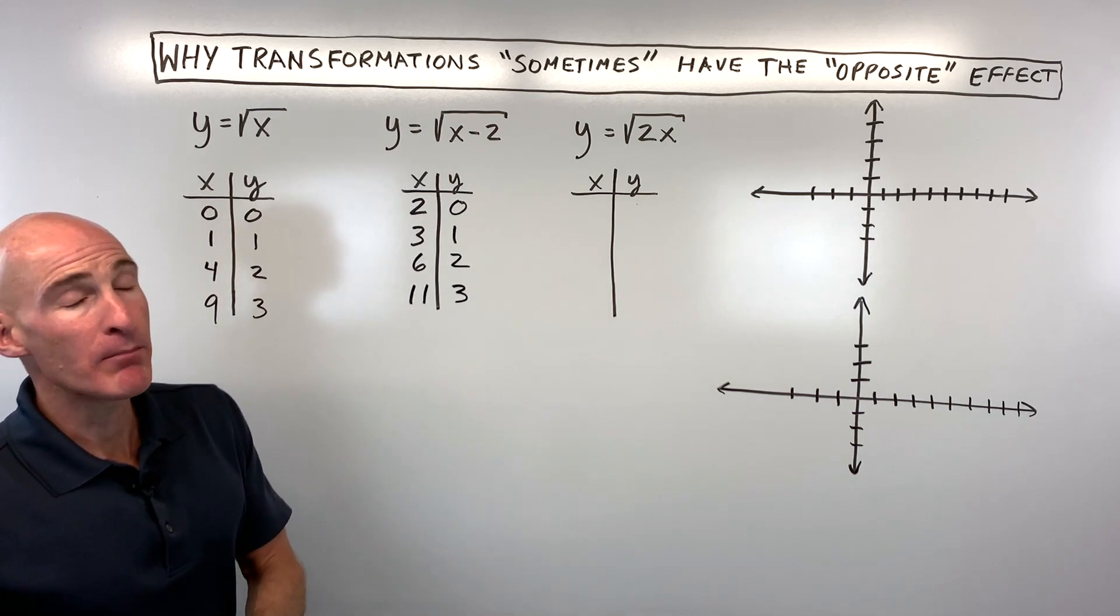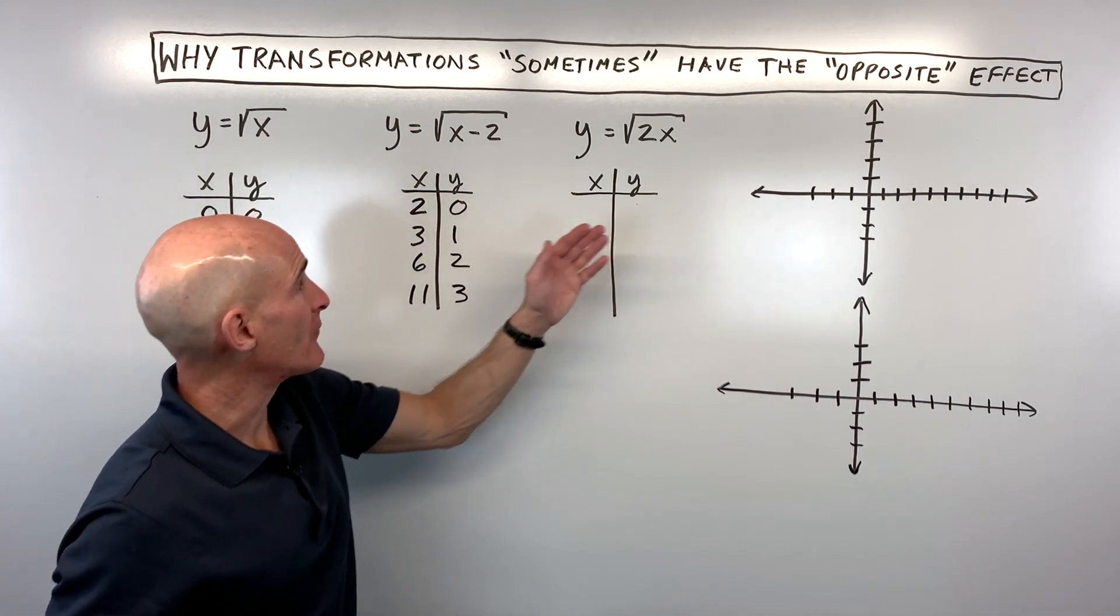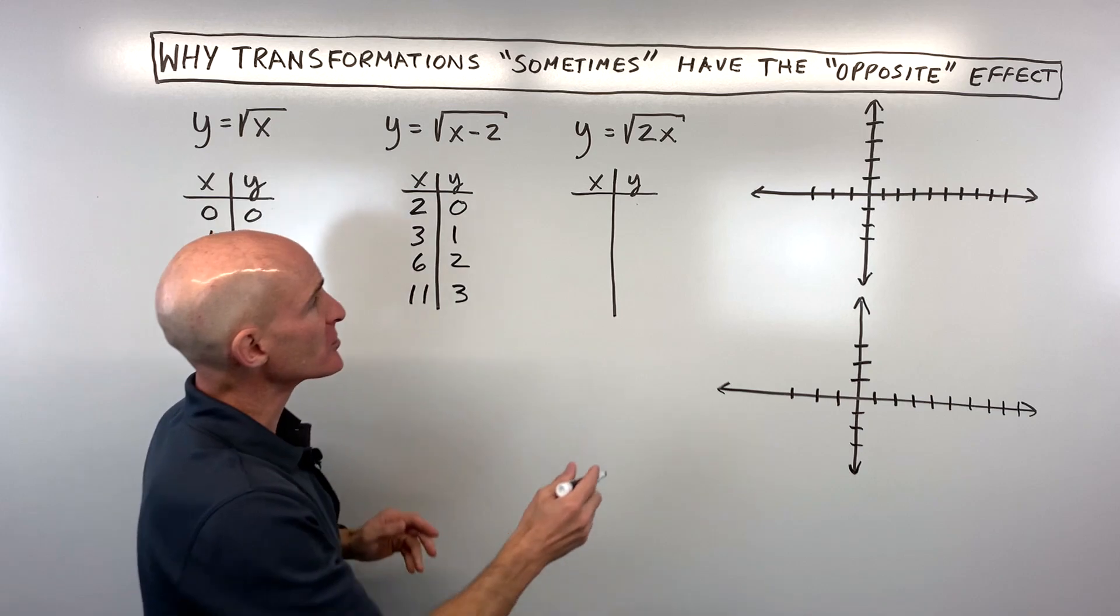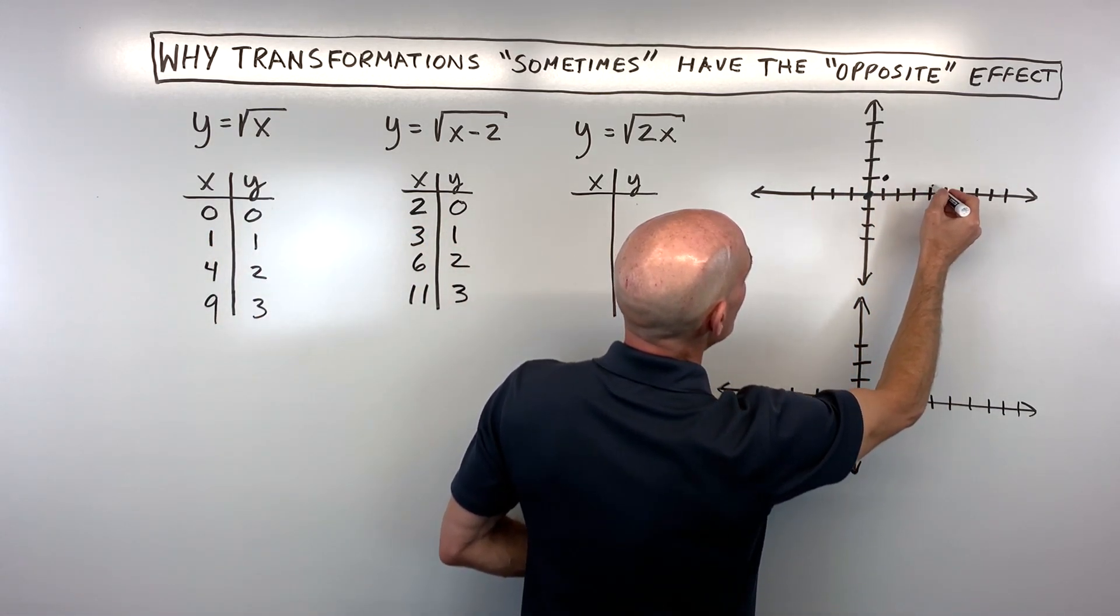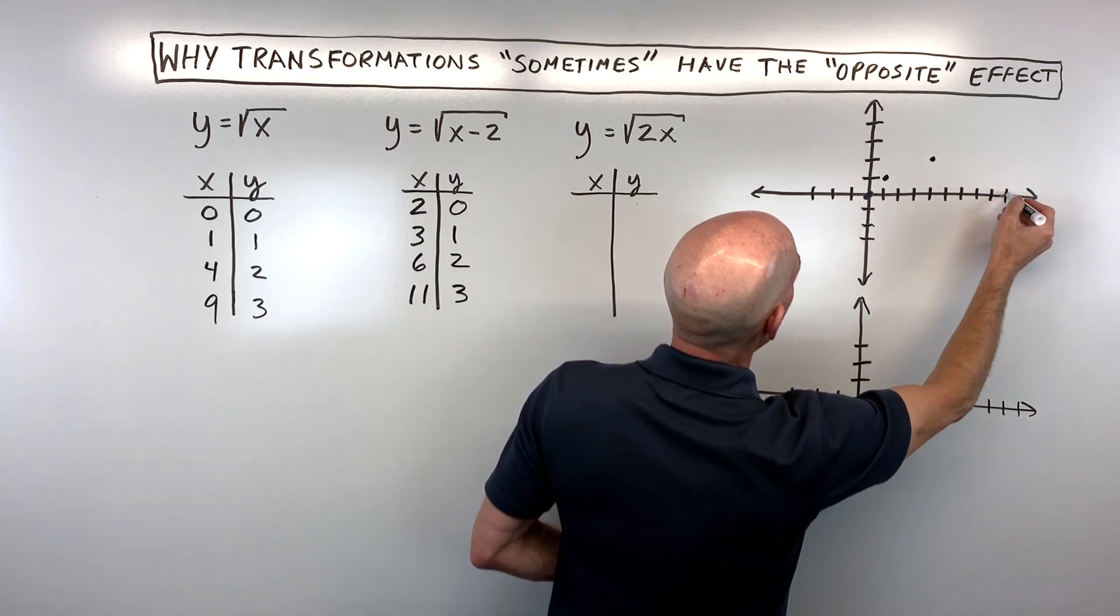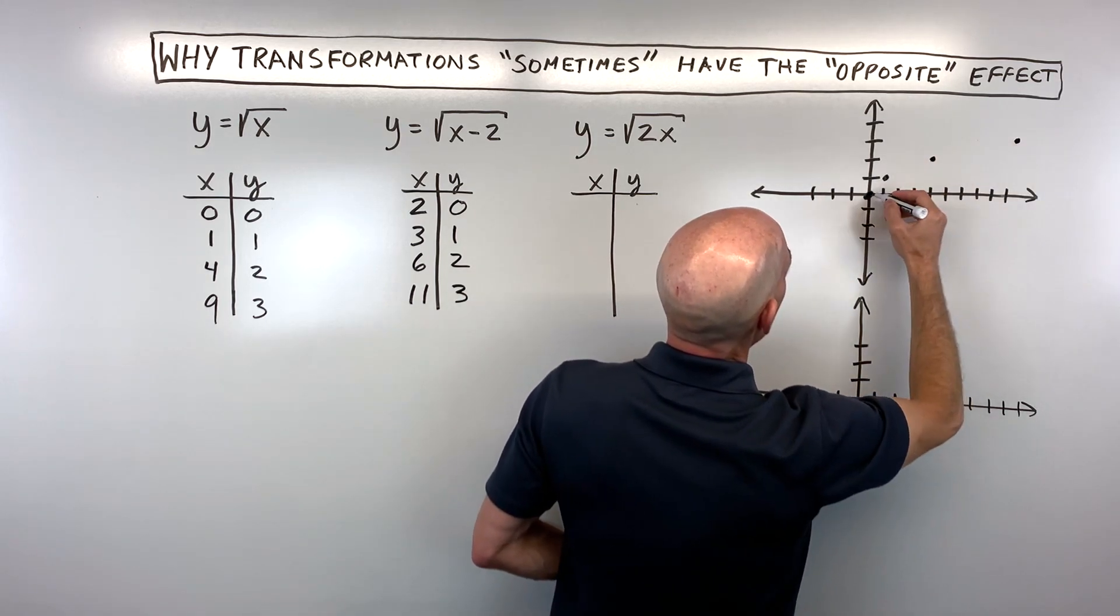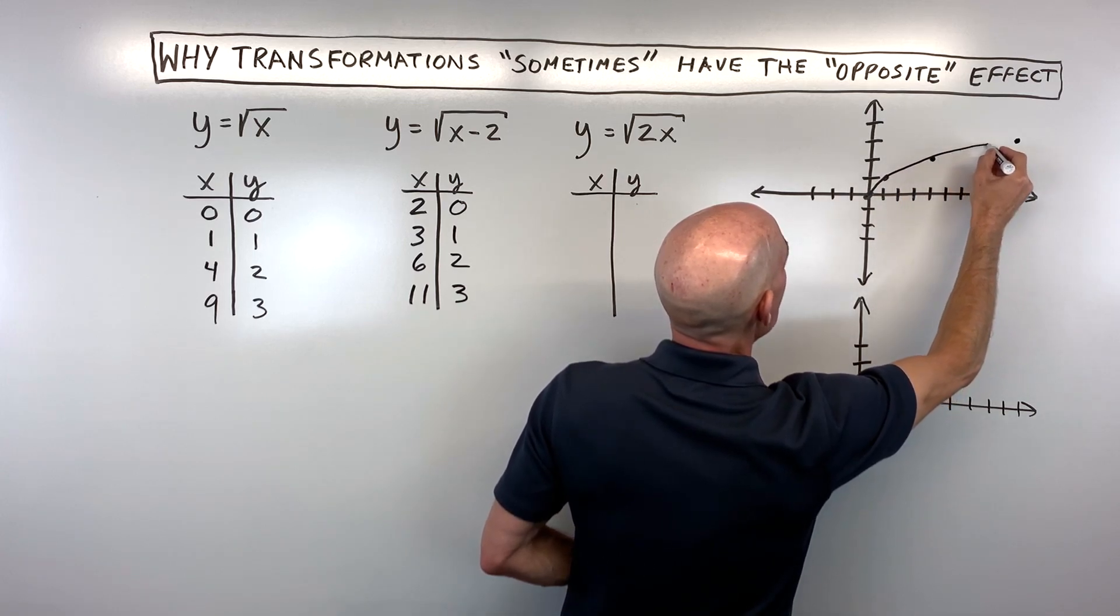Now let's plot these points on this graph. Let's graph the parent function first. That's going to be at (0, 0), (1, 1), (4, 2), and (9, 3). That's our basic graph right there.